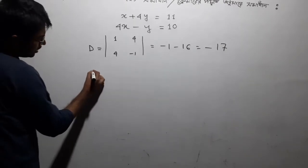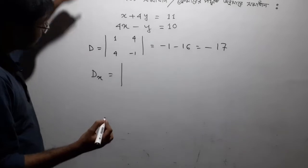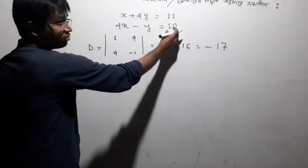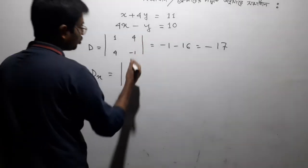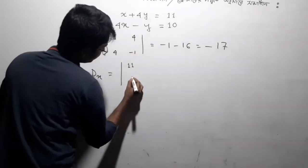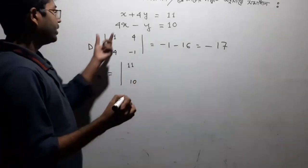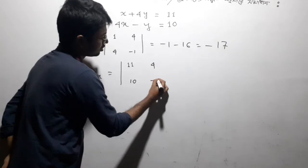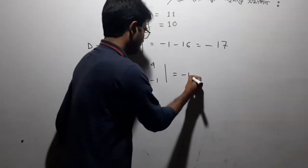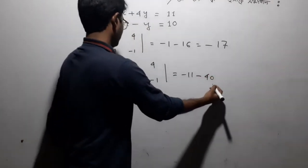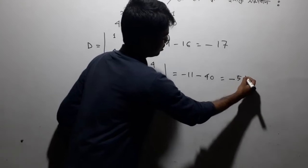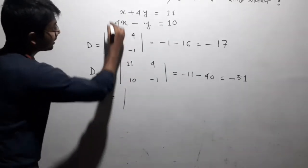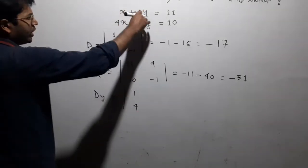So, if you are equal to x, then you will return to x. If you are equal to x, then you will return to x. Then you will return to x, and y is equal to 4 minus 1. So, if you are equal to x, then you will return to x.